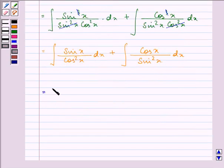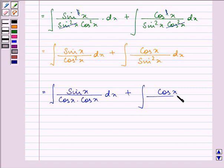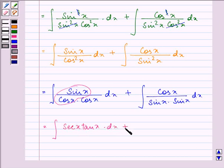We know that 1 over cos square x can be written as sine x over cos x into cos x dx plus cos x over sine square x can be written as sine x into sine x. Now sine x over cos x can be written as tan x and 1 over cos x can be written as secant x.